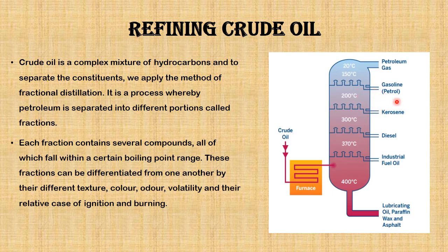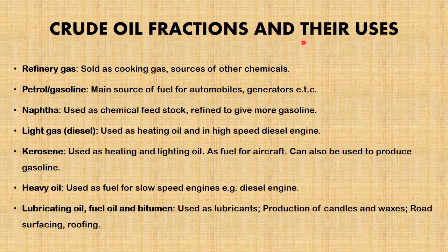Below the column we have lubricating oil, paraffin wax, and asphalt, and at the top we have petroleum gas — the gases we use for cooking in our homes. The crude oil goes through a furnace and then to the fractionating column, where the various fractions are separated out based on their boiling points.